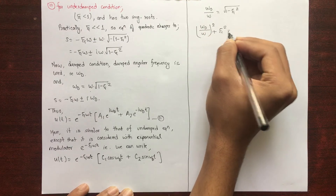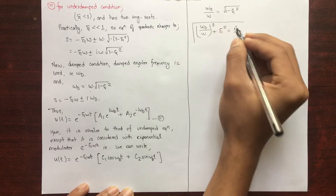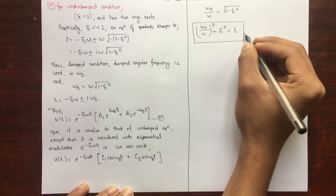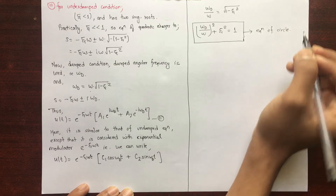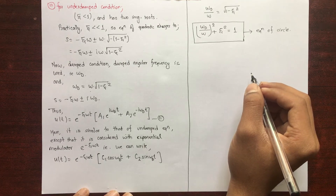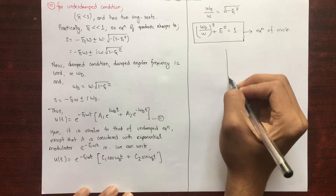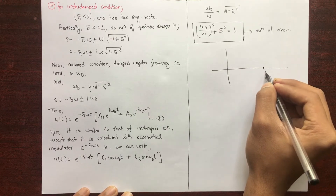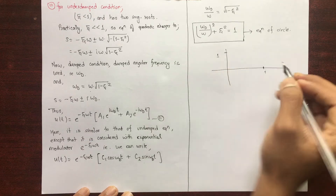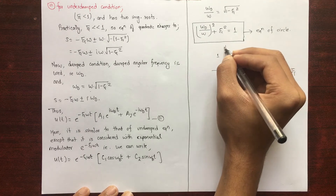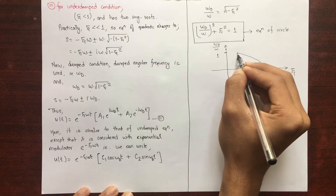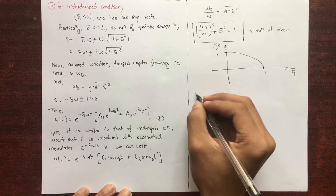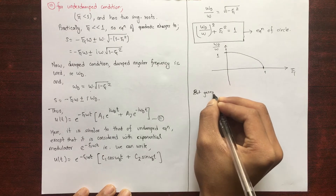Using the relation: (ω_d / ω)² + ξ² = 1. This equation is similar to that of a circle, so I can establish a relation between ω_d/ω and ξ in a graph. Since both ω_d/ω and ξ are positive values, we use only the first quadrant, and the radius is one.